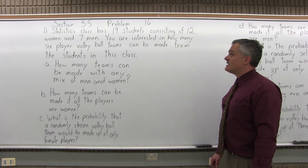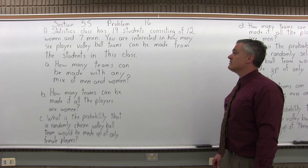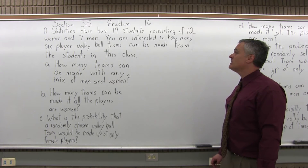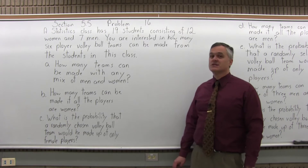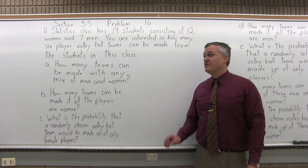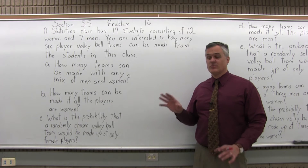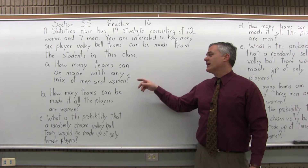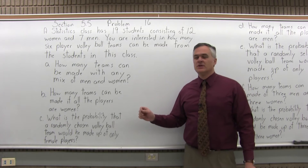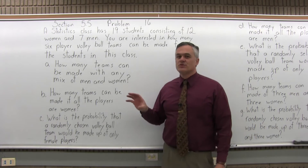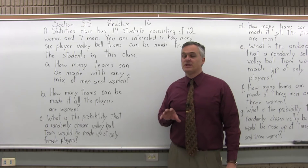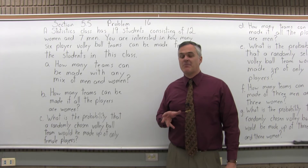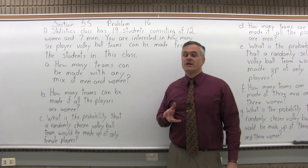The statistics class has 19 students consisting of 12 women and 7 men. You're interested in how many six-player volleyball teams can be made from the students in this class. So you have 19 students altogether, men and women. Part A: how many teams can be made with any mix of men and women? You have 19 students and you're going to pick six of them for a volleyball team. How many different ways can that happen?